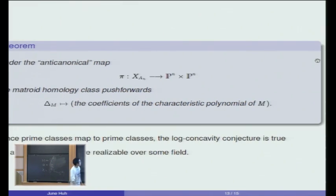This is a purely combinatorial computation, which is valid no matter what matroids. But if you believe in our example of prime classes in P^n × P^n, characterized as log-concave sequences, then this combinatorial statement proves the log-concavity conjecture for all matroids which are realized over some field, because prime classes map to prime classes. If your matroid is realized over field K, then I find a subvariety here that has that homology class, and it pushes forward to some subvariety there. So this sequence should be log-concave.